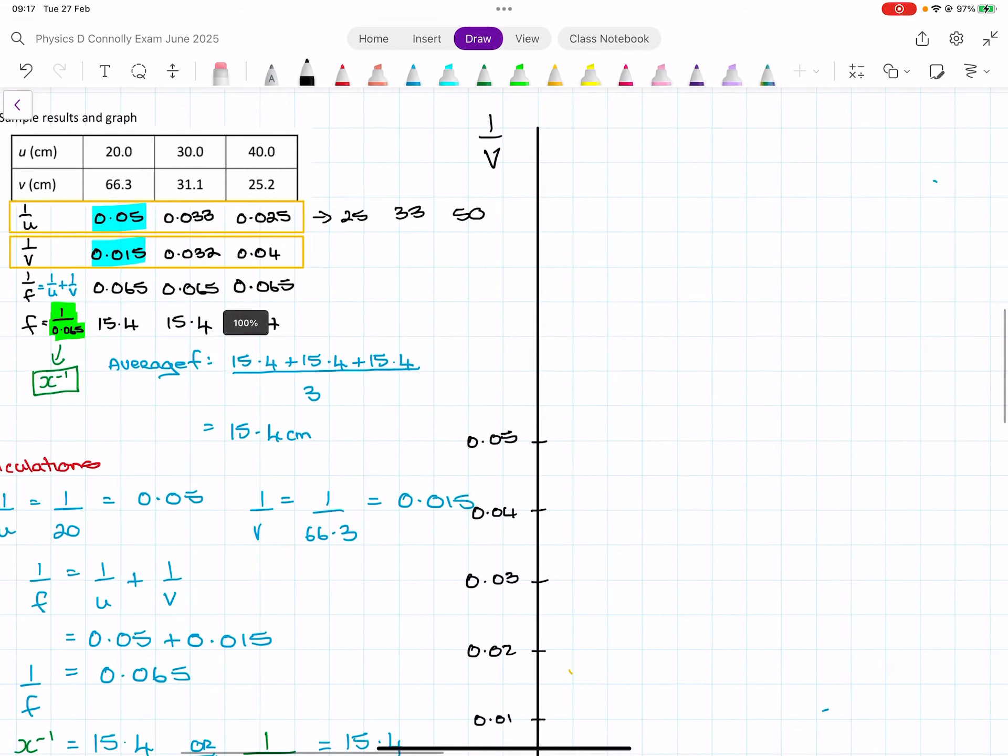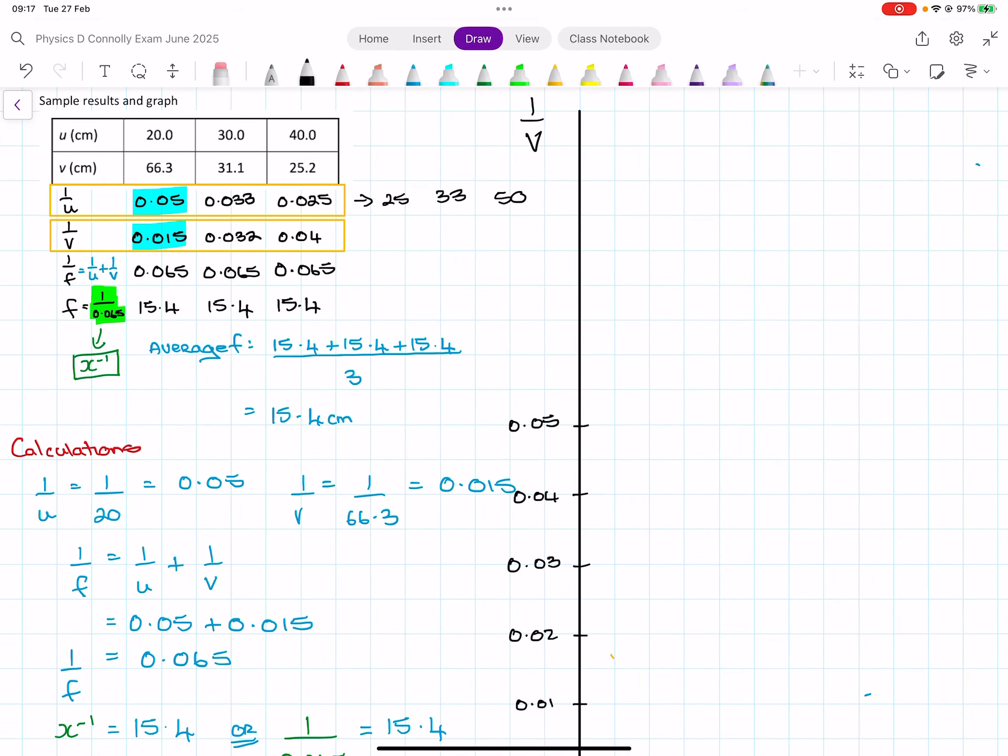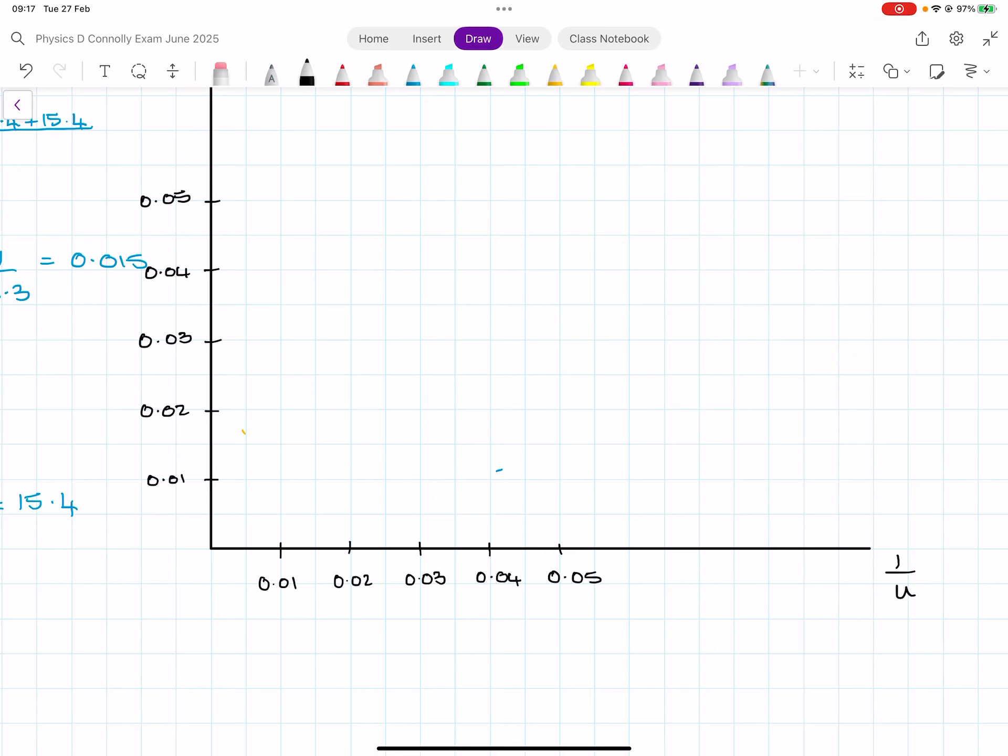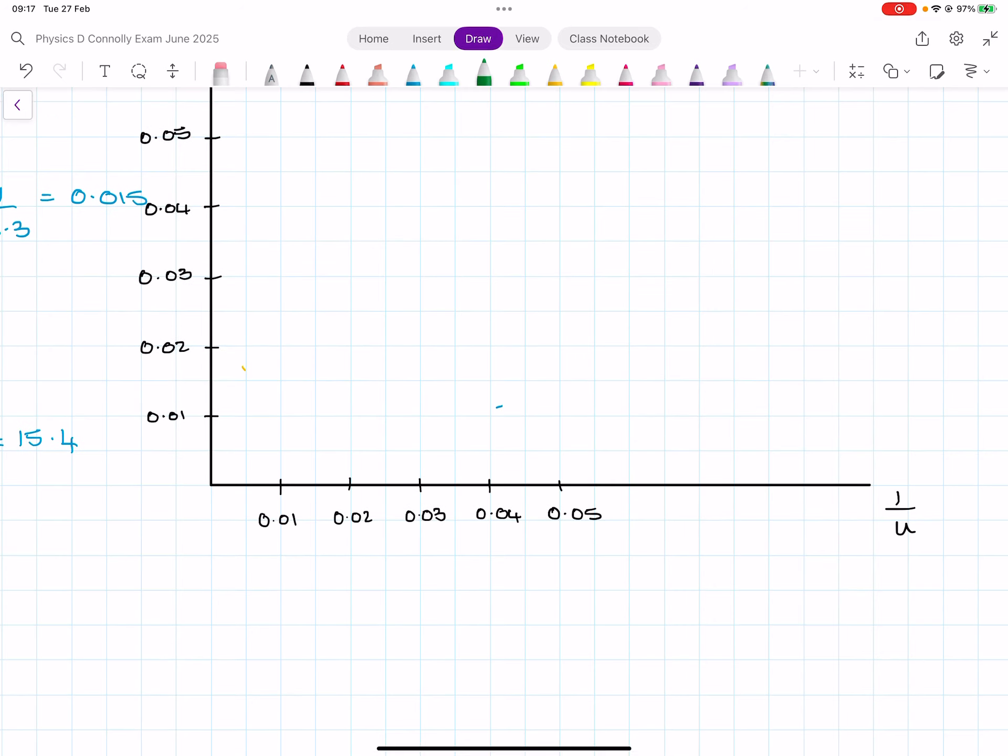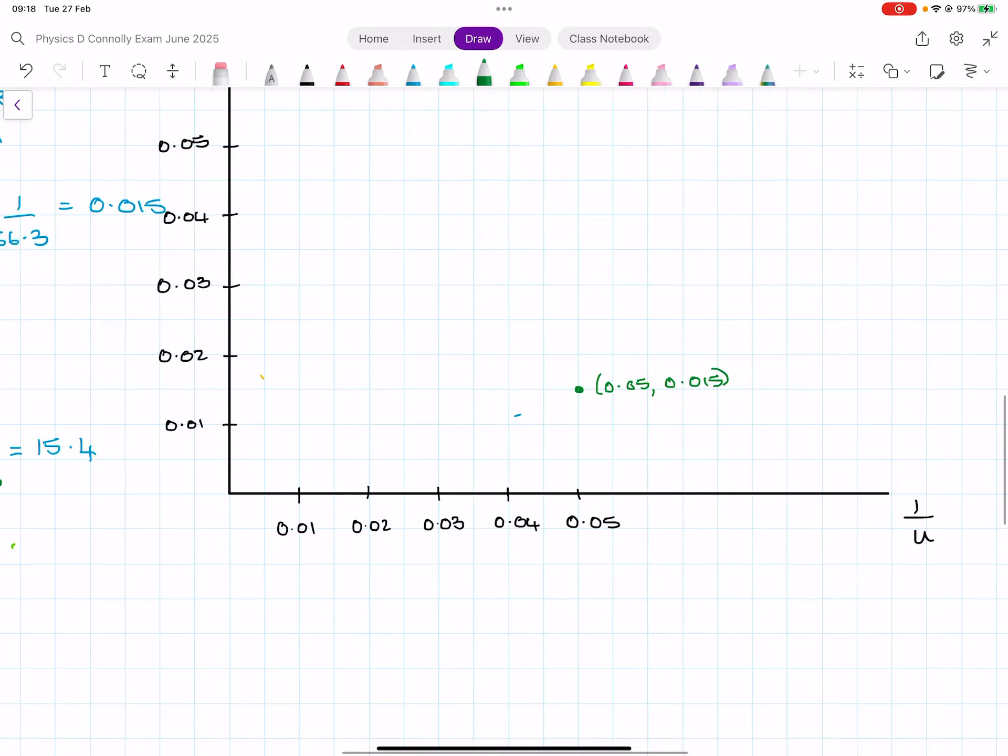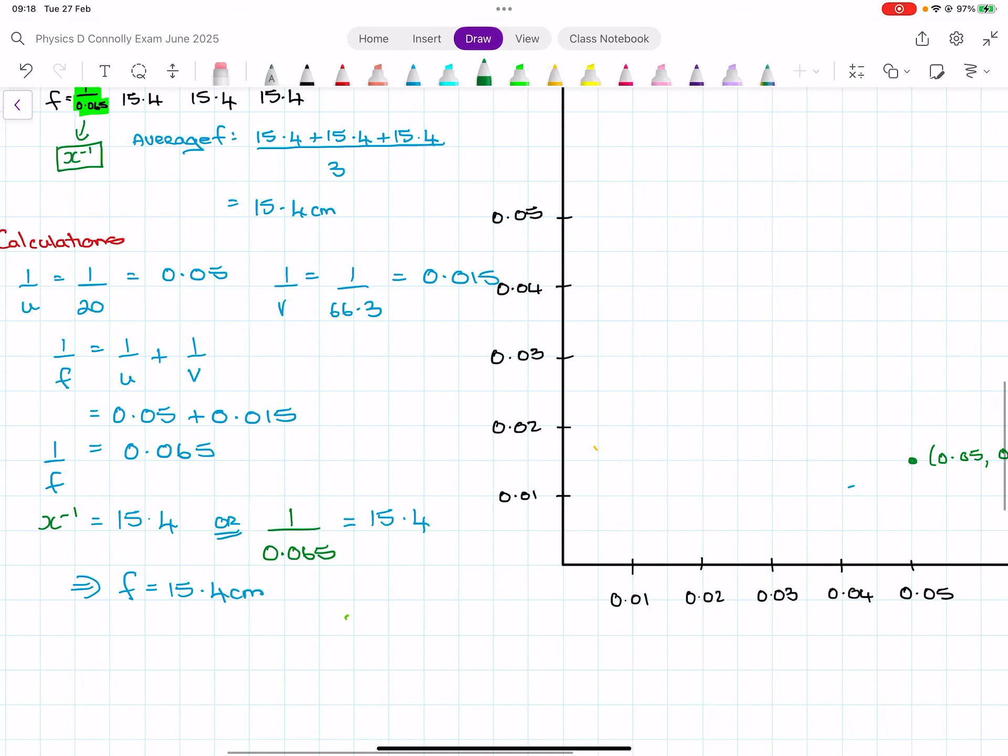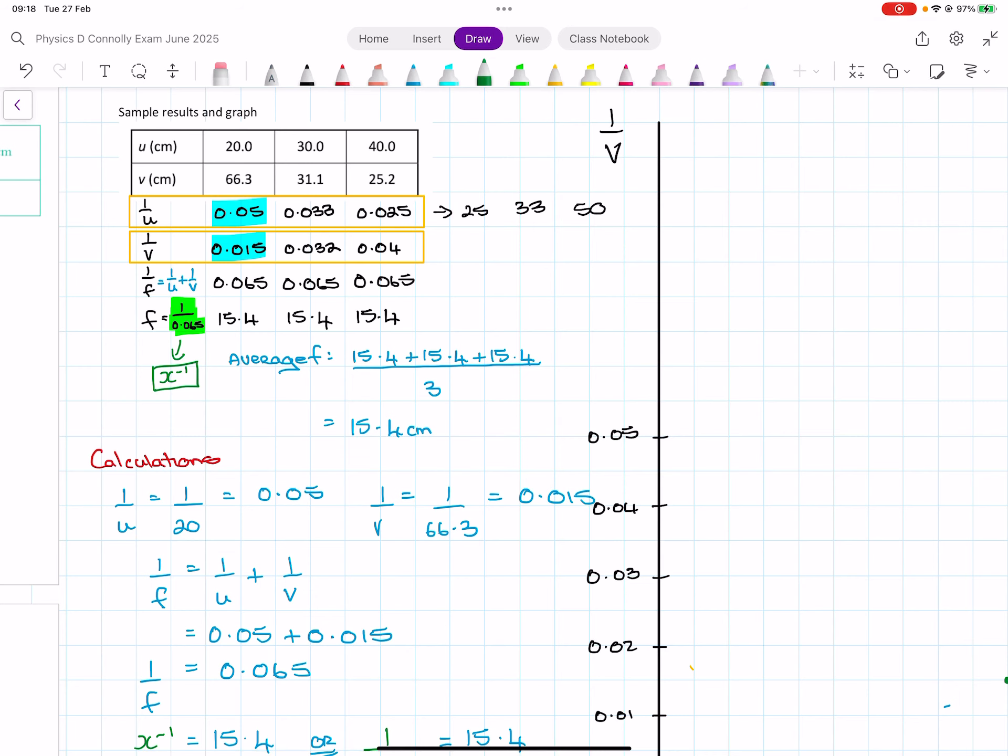The first pair is highlighted in blue there. It's 0.05 on the 1 over u axis and 0.15 on the 1 over v axis. So that's the first one.